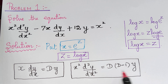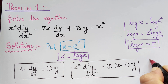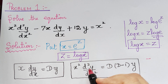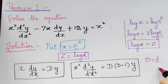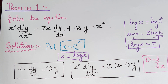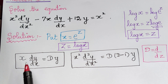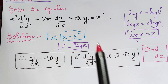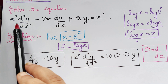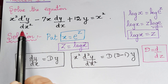Since we have taken x equal to e^z, the capital D here is equal to d/dz. So wherever we see x·dy/dx, we replace it with D·y, and wherever we see x²·d²y/dx², we replace it with D(D−1)·y.